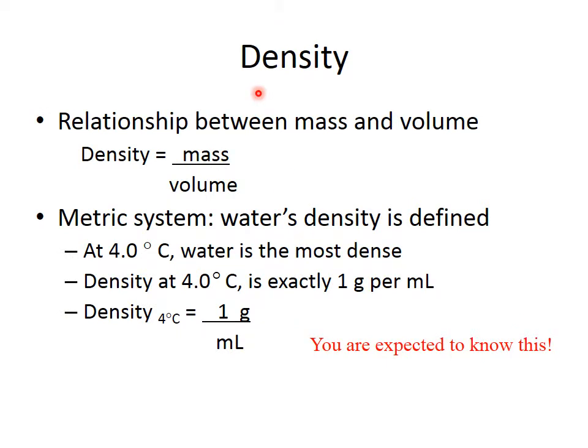Density is defined as mass over volume. And when you're always given a density, you're always going to see the units of mass over volume. The most common that we see is grams per milliliter or grams per centimeter cubed. Remember that a centimeter cubed is the same thing as a milliliter.